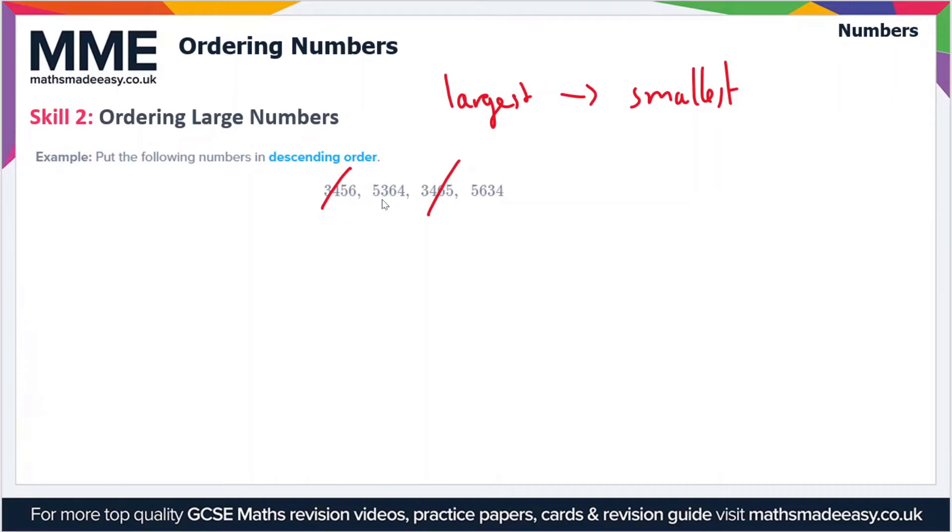So we've got three in the first number here and a six in the second number here. So obviously the six is the larger number, so 5634 is larger than 5364. So again, let's cross those out in blue.